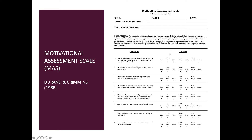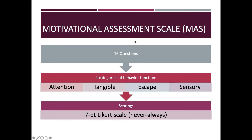We want to complete one of these for each target behavior — that's common practice. The MAS has 16 questions, and subsets of these questions are designed to address a category of behavior function: social positive reinforcement in the form of attention, social positive reinforcement in the form of access to a tangible, social negative reinforcement in the form of escape or avoidance, and automatic reinforcement in the form of sensory stimulation. The questions are designed to get at these functions by way of antecedent conditions or by asking if you're delivering a specific type of reinforcer.